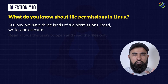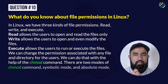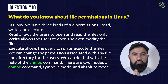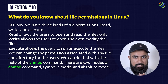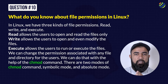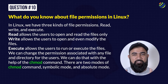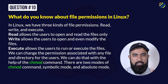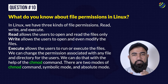Question 10: What do you know about file permissions in Linux? In Linux, we have three kinds of file permissions: read, write, and execute. Read allows users to open and read files only. Write allows users to open and modify files. Execute allows users to run or execute files. We can change the permissions associated with any file or directory using the chmod command. There are two modes of the chmod command: symbolic mode and absolute mode.